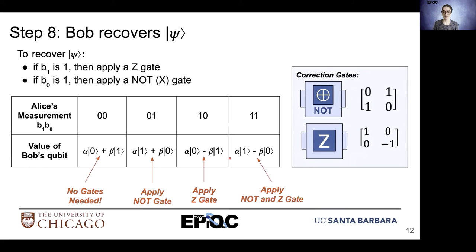If Alice has measured a one one, Bob must apply a NOT gate (X gate) as well as a Z gate in order to correct the bit flip and the phase flip that occurred in his qubit, so that he can recover the state of psi.